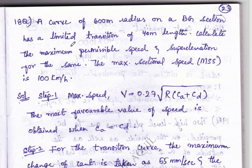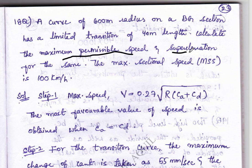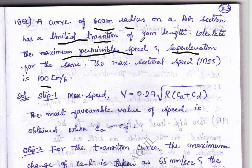Dear students, in today's class we will discuss railway engineering problems. We have to calculate maximum permissible speed and super elevation for the given values: a curve of 600 meter radius, maximum sanctioned speed in kilometers per hour, and a limited transition length of 40 meters.